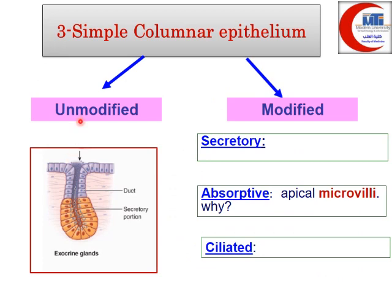Simple columnar epithelium is formed of one layer of columnar cells with basal oval nuclei. It can be unspecialized, present in the lining of salivary gland ducts, or specialized for secretion — called simple columnar secretory epithelium — like the lining of the stomach.